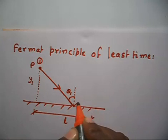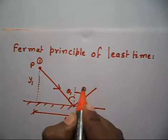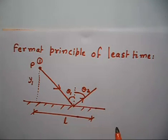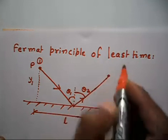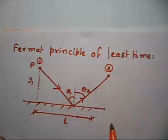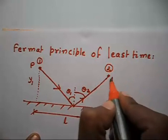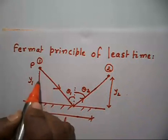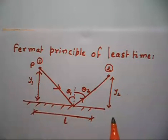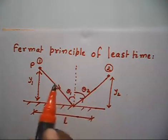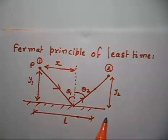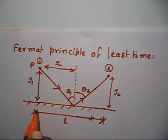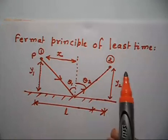The ray reflects at an angle of theta2. There is a point 2, and they do not specify whether point 2 is in the same plane as point 1 — so in the proof it is not required. This distance is Y2, and this distance is Y1. Let us say this distance from here to here is X. The total distance from here to here is L.